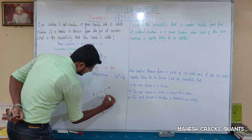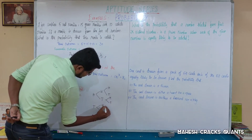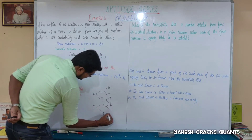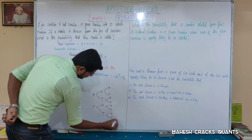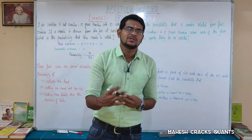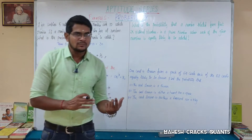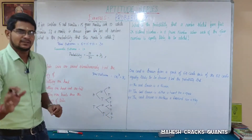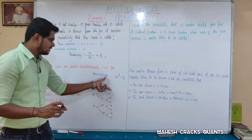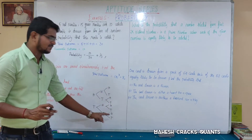Continuing the tree: head-tail-head, head-tail-tail, tail-head-head, tail-head-tail, tail-tail-head, tail-tail-tail. That gives us all 8 total outcomes. Now we can answer each sub-question.